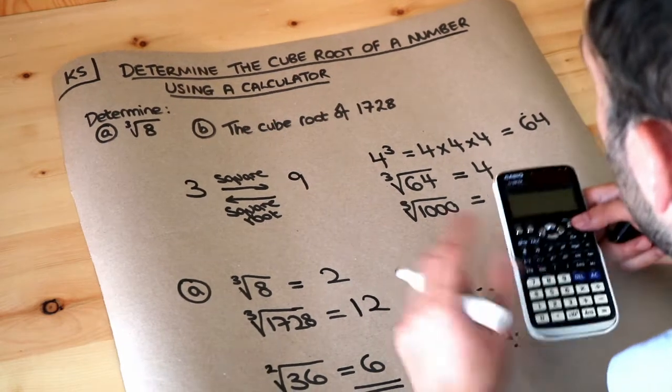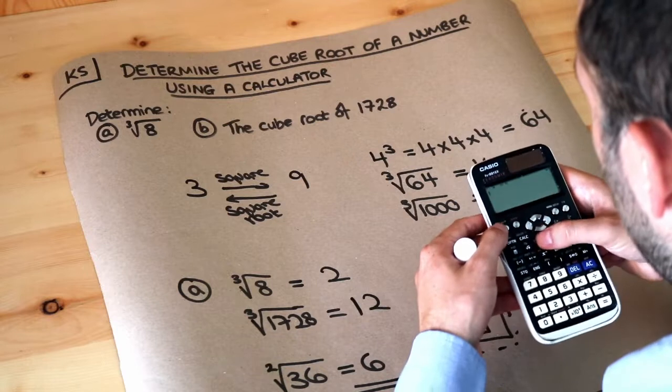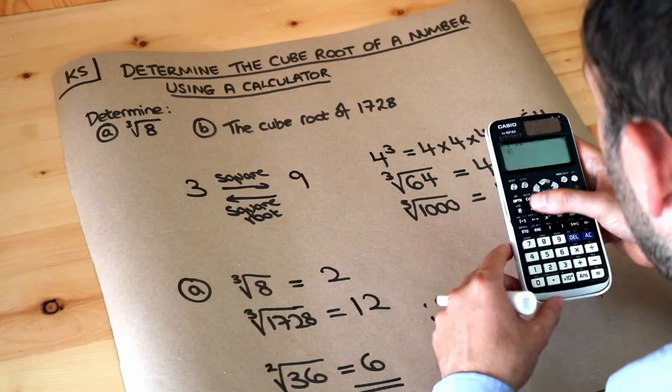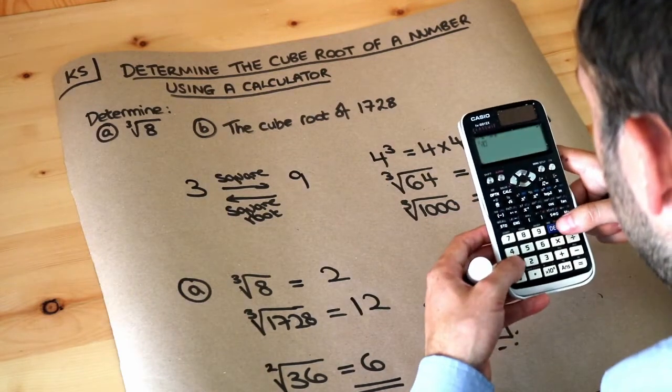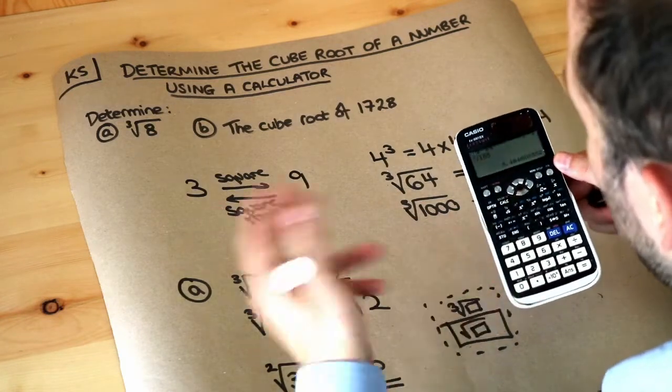And we can also do this on a calculator where we don't get a nice whole number as the answer. So if I did, for example, the cube root—so shift, square root key—and then I did, say, 165, the cube root of 165 is 5.4848.